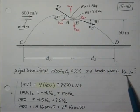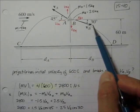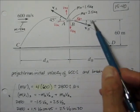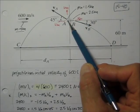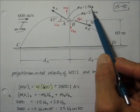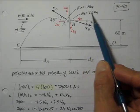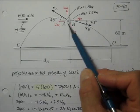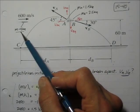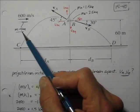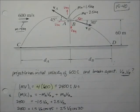The projectile breaks apart into piece A and piece B. Piece A (going backward) has a mass of 1.5 kilograms, and piece B has a mass of 2.5 kilograms. The whole projectile weighs 4 kilograms and was going at 600 meters per second. We want to find the velocities of A and B, which will each have x and y components.